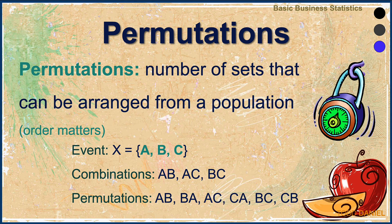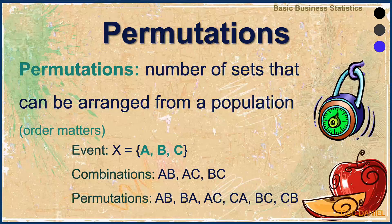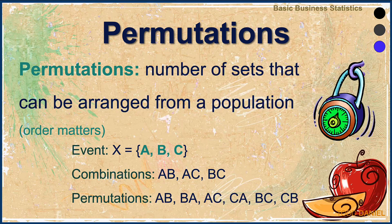Now we should talk about permutations. Permutations are the number of sets that can be arranged from a population — in this case, the order matters. For example, event X has three possible outcomes: A, B, and C. There are three combinations — AB, AC, and BC — because the order doesn't matter. However, for a permutation the order would matter: AB is different from BA, AC is different from CA, and BC is different from CB, leaving us a total of six permutations.